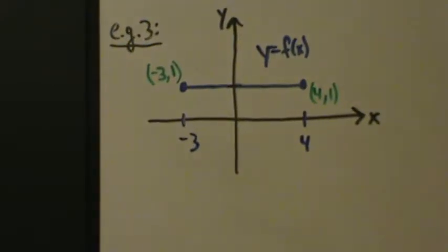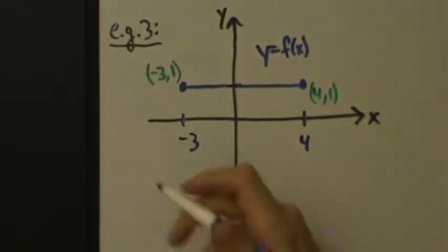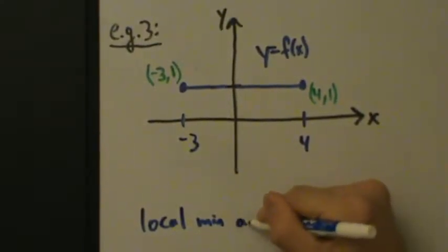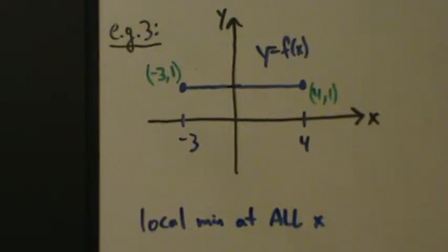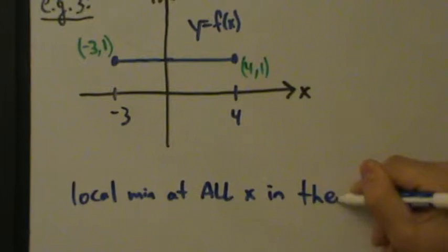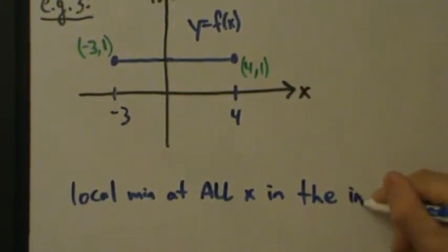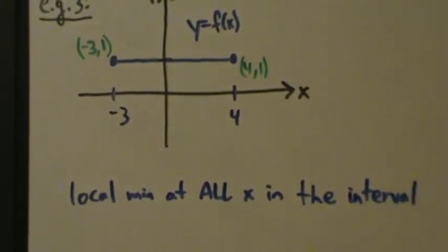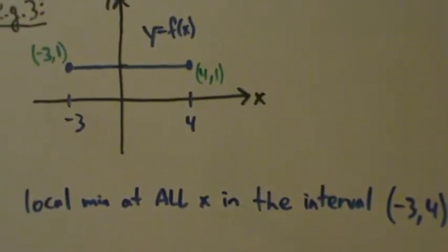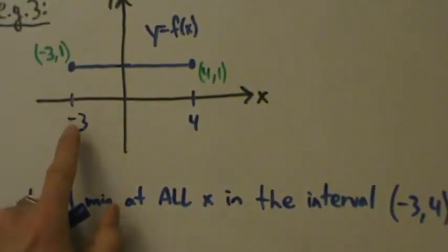This is why this is kind of tricky or maybe at the very least goofy. What we have is a local min at all x in the open interval from negative 3 to 4. So at every value of x larger than negative 3 and less than 4, we have a local min.